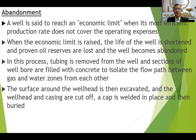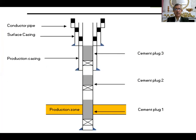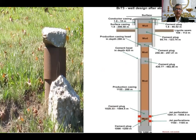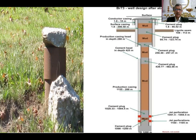Then abandonment — where the well cannot produce. In this case, we have to close it: plug and abandon the well. We set three cement plugs or more — each one has to cover the open perforation above it by 50 feet and below it by 50 feet. So the well will be safe and nothing will get out of it. Then we cut it and close the well.